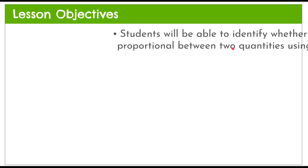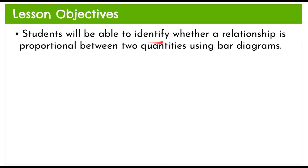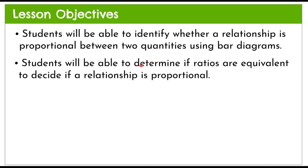Today in our lesson we have two objectives. The first is that we want to be able to identify whether a relationship is proportional between two quantities using a bar diagram. The second is we'll be able to determine if ratios are equivalent to decide if the relationship is proportional.